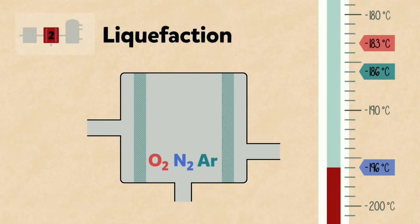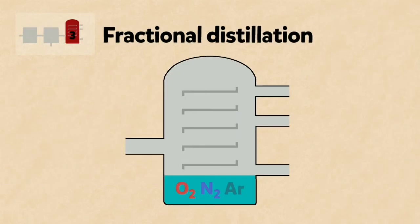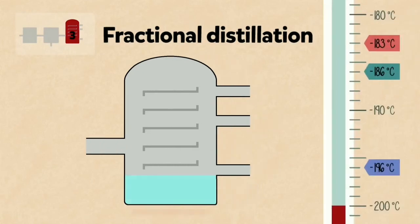The liquid nitrogen, argon, and oxygen are then separated by fractional distillation. Let's have a look at this process in detail. First, as we said before, the air is cooled to minus 200 degrees Celsius and passed into the fractionating column. It is then gently warmed.